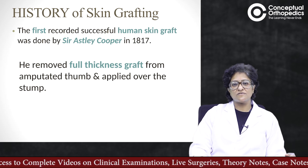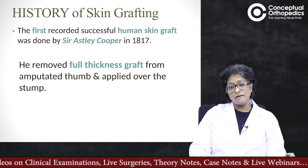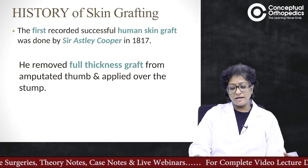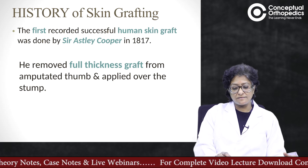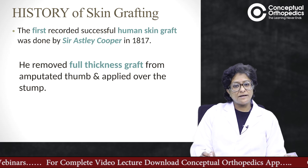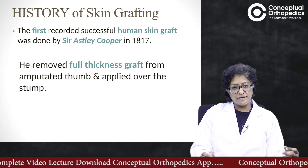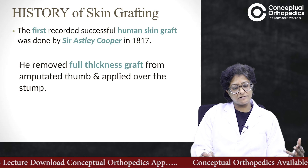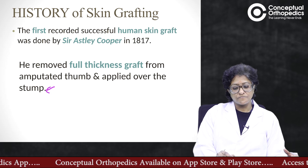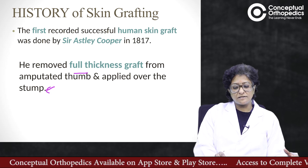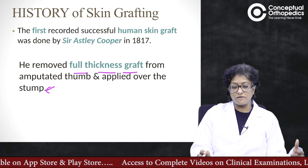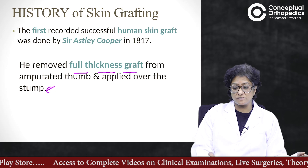The history of skin grafting is very interesting. The first skin grafting was done in a sheep by Professor Bolidio. However, in humans it was done by Sir Ashley Cooper in 1817. What he did was receive an amputated thumb, removed the full thickness skin from the thumb, and applied it over the stump to cover the wound. Technically, he performed the first full thickness graft — from the amputated thumb to cover the amputated stump.